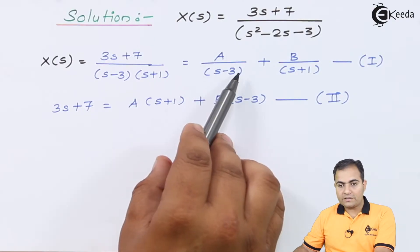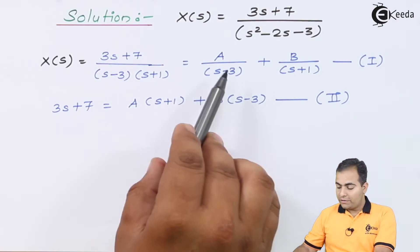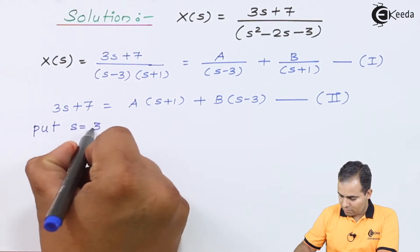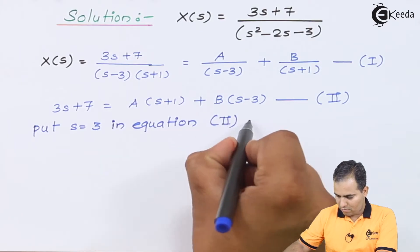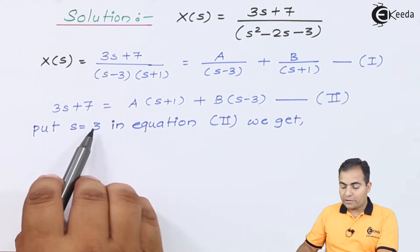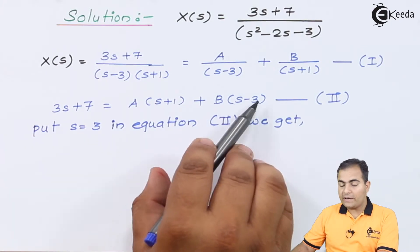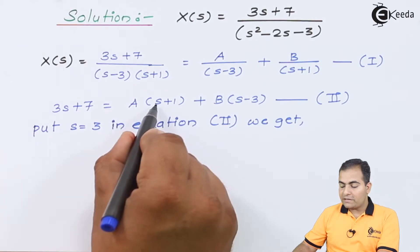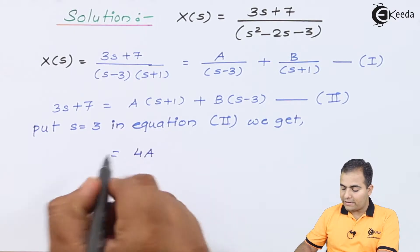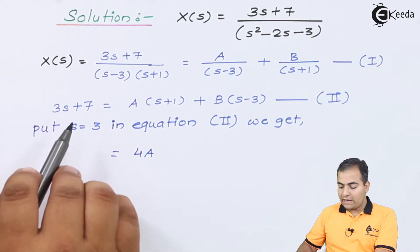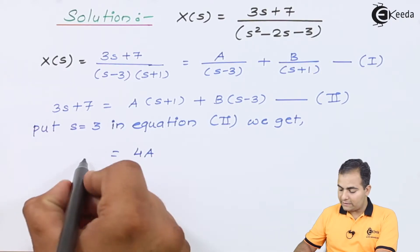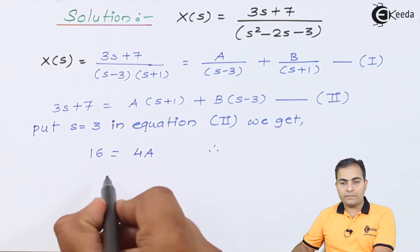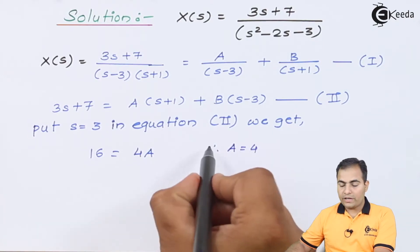To find A: equate (s - 3) = 0, so s = 3. Substitute s = 3 into Equation 2. The B term vanishes since (s - 3) = 0. On the right-hand side we get A(3 + 1) = 4A. On the left-hand side, 3(3) + 7 = 9 + 7 = 16. Therefore A = 16/4 = 4.